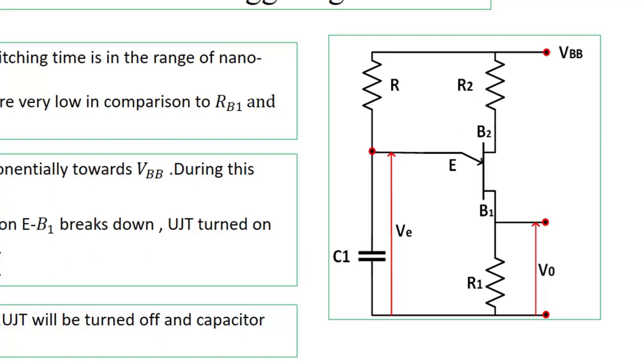So very simple circuit is there. Again, I am repeating. When the UJT is off, capacitor will charge. Capacitor voltage equals the peak voltage, then UJT will be on and capacitor will discharge through C1, E, B1, R1 and back to C1.